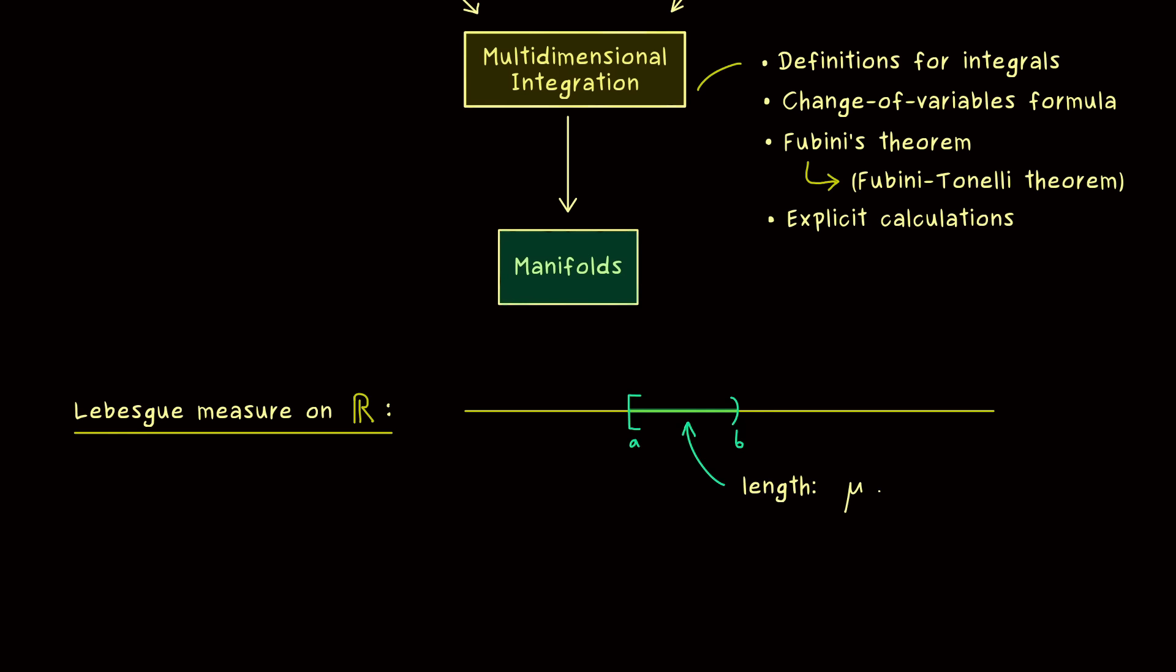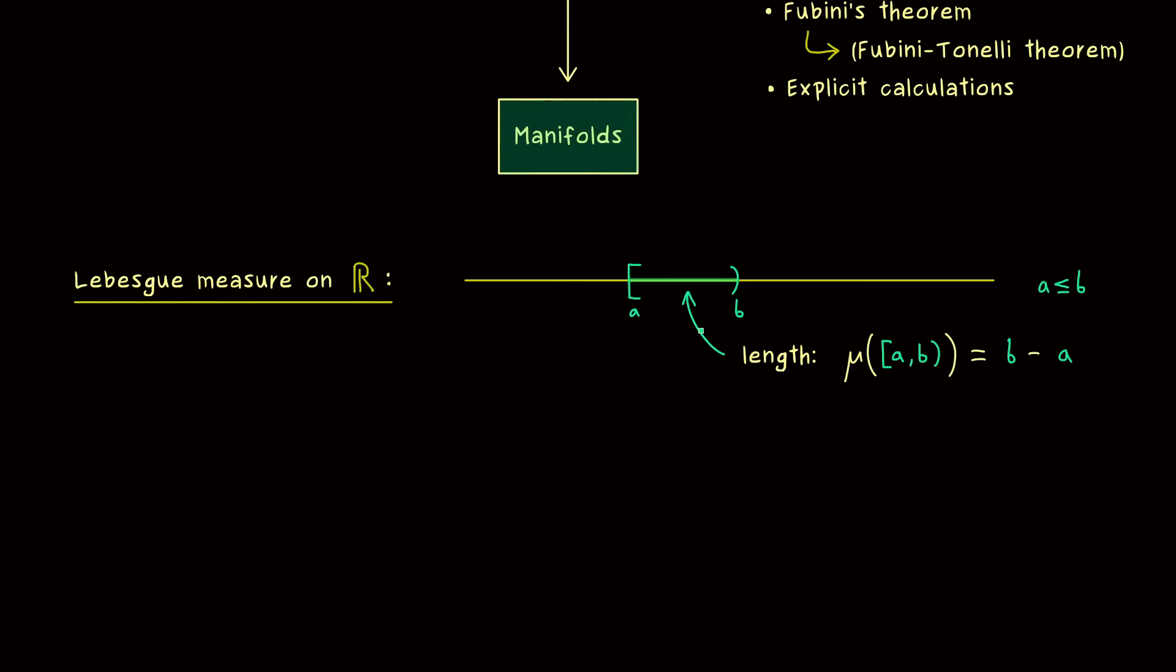And more precisely, we would write it as mu of this interval is given by B-A. And obviously, we only want to have this formula in the case that B is bigger than A. Therefore, the result here is that we already have a length measurement for intervals.